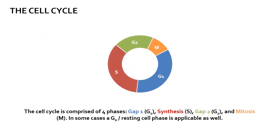Biological life exists in cyclical states. The most classical example on a microbiological scale is the cell cycle, essentially the life of a cell. The basic cycle of a eukaryotic cell, such as a skin cell for example, is comprised of four phases.